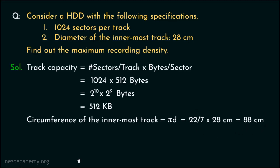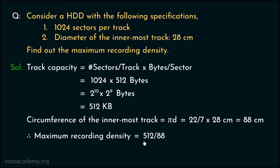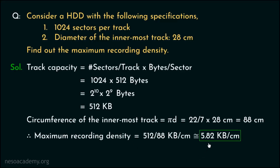Now we have all the data to calculate the maximum recording density. All we have to do is divide the track capacity — 512 kilobytes — by the circumference — 88 centimeters. The unit of the maximum recording density will be kilobytes per centimeter, which is approximately 5.82 kilobytes per centimeter. So the maximum recording density for this hard disk drive is 5.82 kilobytes per centimeter.